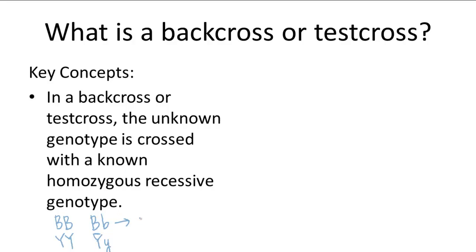So for these two examples, you'd have an unknown brown-eyed person crossed with a blue-eyed person, which isn't as realistic, or an unknown yellow pea individual crossed with a green pea individual.